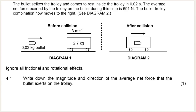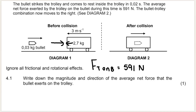Question 4.1: write down the magnitude and direction of the average net force that the bullet exerts on the trolley. What they gave us is the force that the trolley exerts on the bullet, which is 591 newtons. They didn't give a direction, but think about it — the trolley exerts a force on the bullet. The bullet is coming this way, the trolley is coming this way, so the trolley will exert a force on the bullet to the left. What the question wants is the force the bullet exerts on the trolley — swap the two words around.